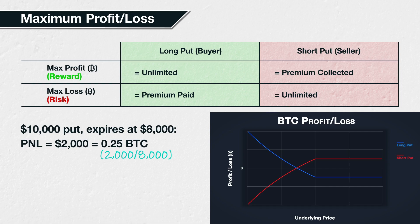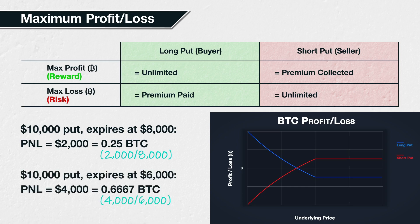Now, what if the Bitcoin price is another $2,000 lower instead and expires at $6,000? The put option is now worth $4,000, so double the amount of dollars. However, as the Bitcoin price is now only $6,000, this $4,000 is paid as 0.6667 BTC, rounded to four decimal places. So the dollar value of the option has doubled, but because the price of Bitcoin has decreased, the amount of Bitcoin required to settle this has more than doubled.